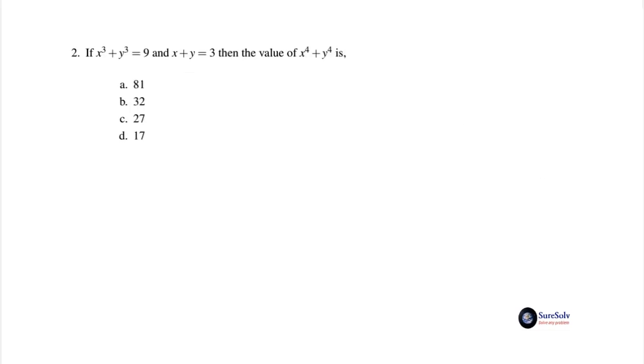The second problem is: if x³ + y³ = 9 and x + y = 3, then the value of x⁴ + y⁴ is: option a) 81, option b) 32, option c) 27, and option d) 17. The values of two expressions are given and the third expression is to be evaluated.